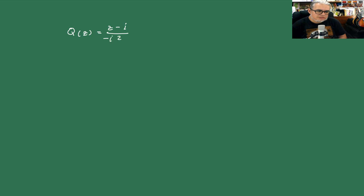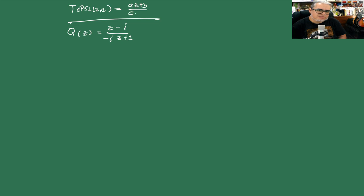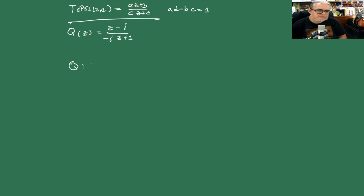¿Qué hacemos con estas? Las transformaciones de Möbius son de la forma T(ζ) = (aζ + b)/(cζ + d) con ad - bc = 1. Vamos a usar una transformación especial, Q(ζ) = (ζ - i)/(-iζ + 1), que manda H⁺ en Δ.